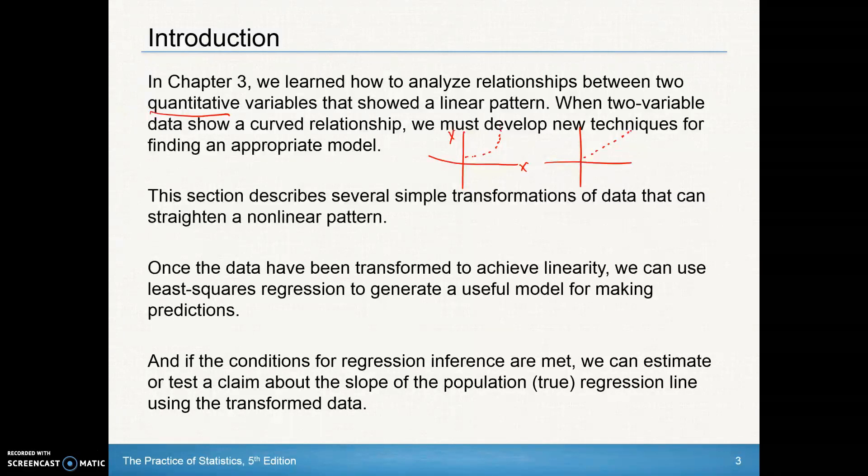So once the data have been transformed to achieve linearity, then we can use the least squares regression to generate a useful model for making predictions. You know, we can get our y hat equals our a plus bx and use that. And if the conditions for regression are met, remember that's our liner, however you want to pronounce that in box two, we can estimate or test a claim about the slope of the population regression line using the transformed data.